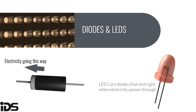A diode is a specialized electronic component with two electrodes — the anode and the cathode. Its special property is that it only allows electricity to flow in one direction, from the anode (positive) to the cathode (negative). Diodes are often used to protect circuits from reversed polarity or to protect components from back EMF — an electromagnetic voltage that pushes against the current which induces it. Diodes usually have a stripe to indicate the cathode, the negative side.